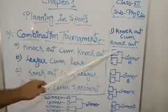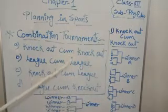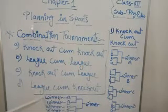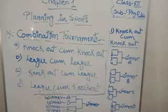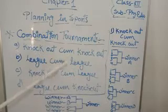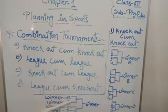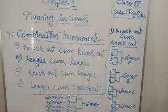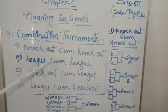After that, it is called the first knockout. Then, Knockout come Knockout means we again organize the tournament on a knockout basis. We conduct the matches of Winner A, Winner B, Winner C, and Winner D on a knockout basis. So one knockout is there and a second knockout also takes place, from which we find the overall winner. This is the process of Knockout come Knockout — the first type of combination tournament.